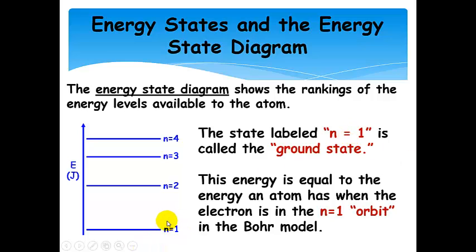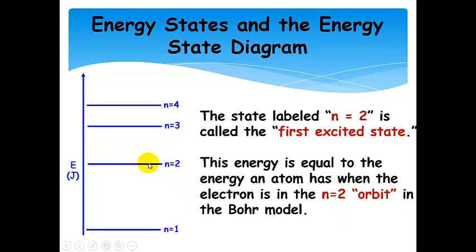N equals 1 is special — it's called the ground state. That's the lowest energy; that's the most stable. This energy is equal to the energy an atom has when the electron is in that innermost n equals 1 orbit. N equals 2 is the first excited state. Anything higher than n equals 1 is called an excited state. N equals 3 would be the second excited state. If the electron is in the n equals 2 orbit, it's at higher energy, farther away from the nucleus, and that's not as favorable. Going up in energy is not favorable — it's an excited state for that atom.